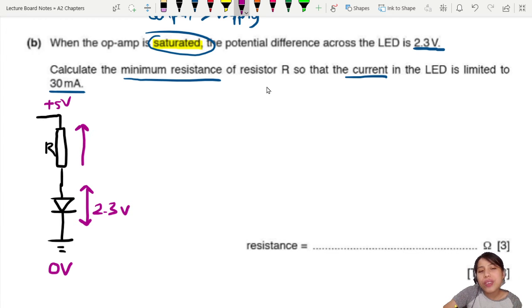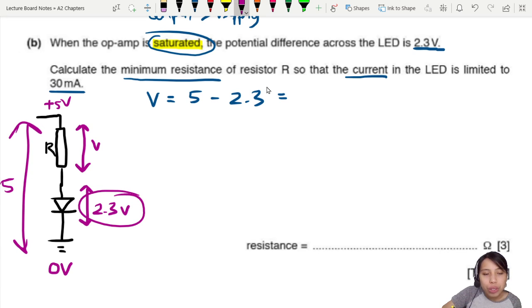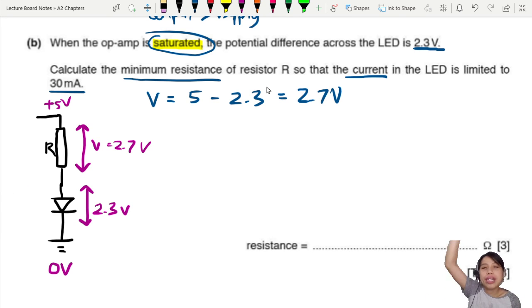If you want to find this V, you need to know that V equals 5 volts minus 2.3. They share potential - you drop from 5 to zero, so the total drop is 5 volts. If you already drop 2.3, what else is there to drop? This one will be 2.7 volt drop. Check: 2.7 plus 2.3 equals 5. Next, you want to find the resistance. The resistor will help protect the LED so that the current is not too big. We want it to be maximum 30 milliamps.